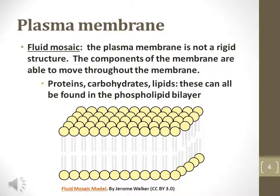Fluid mosaic is how to describe the plasma membrane. This means structures that are fixed in the membrane are able to move around relatively freely throughout the membrane. Proteins, carbohydrates, and lipids can be found in the phospholipid bilayer.